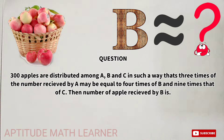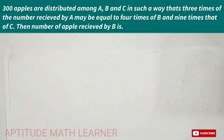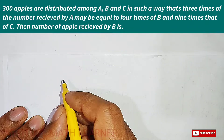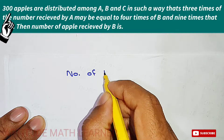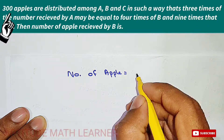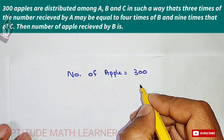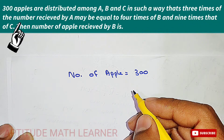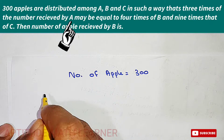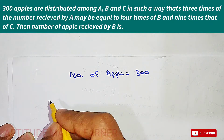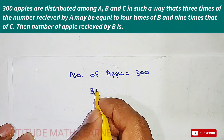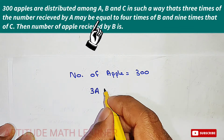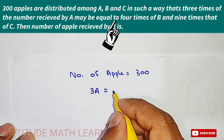We have to find out the number of apples received by B. The first thing we have to do is find out the ratio. So three times the number of A is equal to four times of B.